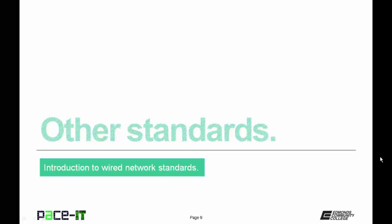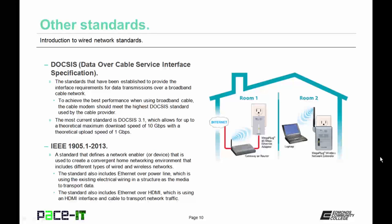It's time to conclude with some other standards. First up is DOCSIS — Data Over Cable Services Interface Specification. These are the standards established to provide interface requirements for data transmissions over a broadband cable network. To achieve the best performance, the cable modem should meet the highest DOCSIS standard used by the cable provider. The most current DOCSIS standard is 3.1, which allows for a theoretical maximum download speed of 10 Gbps and a theoretical upload speed of 1 Gbps.